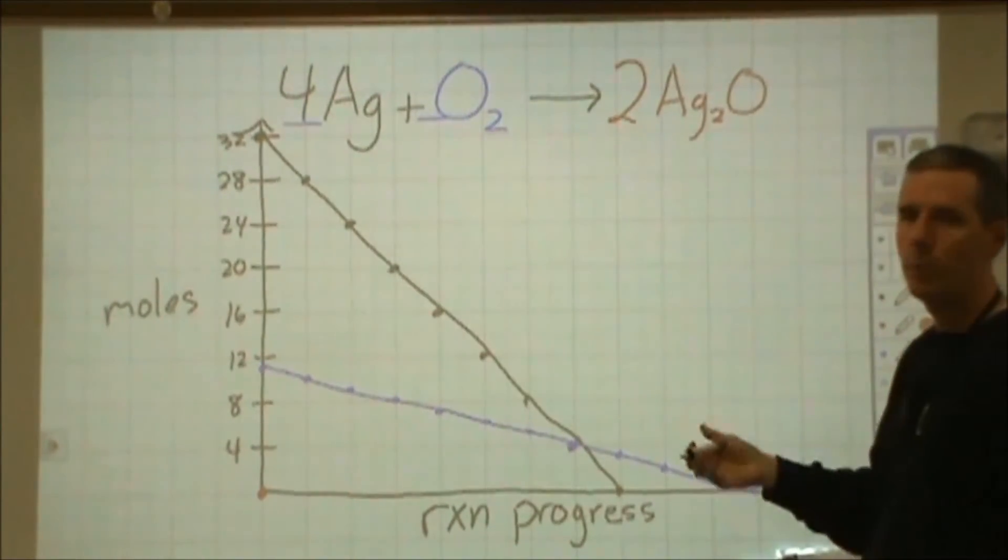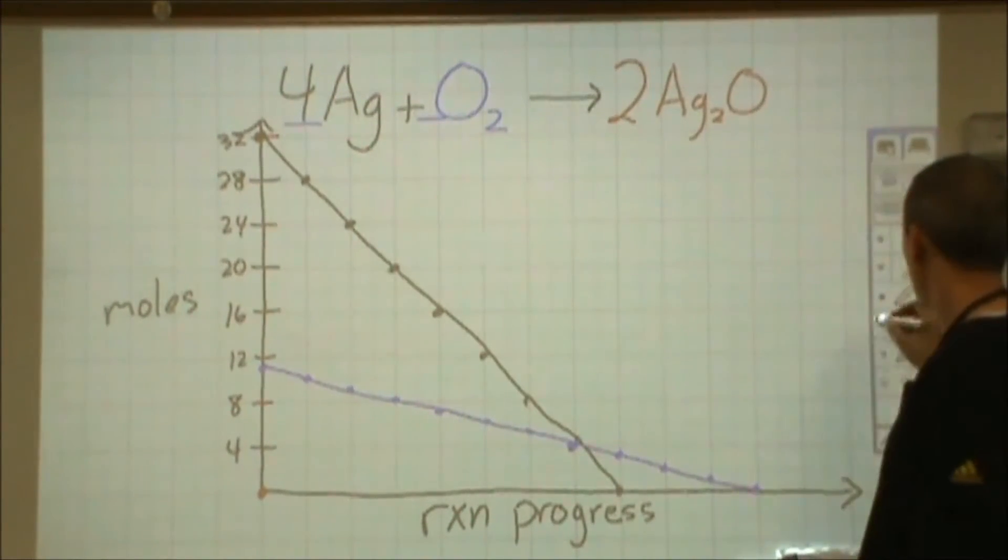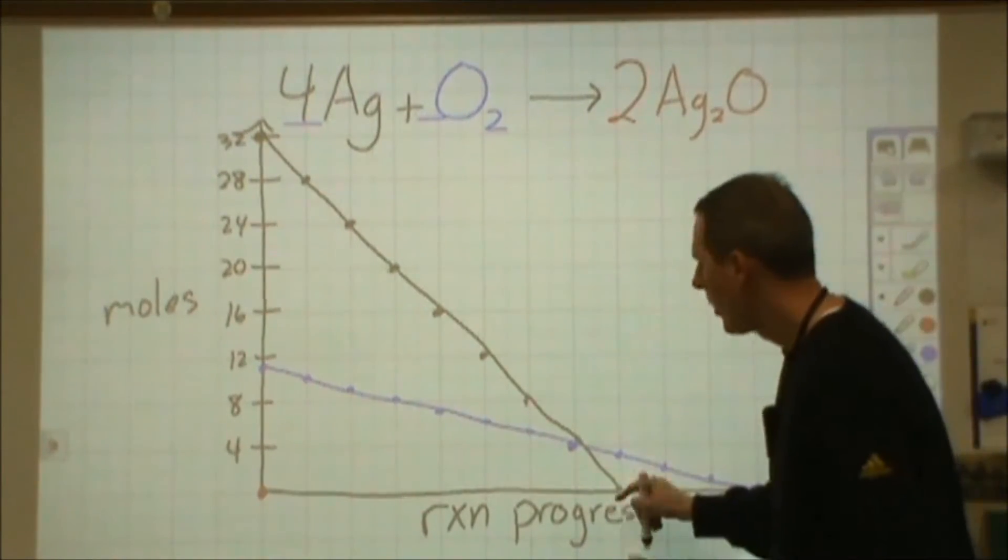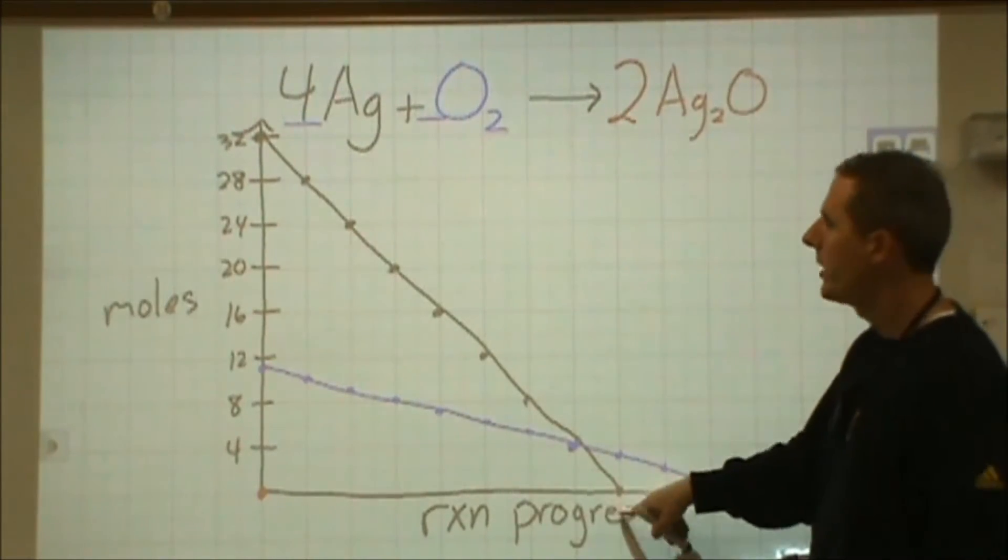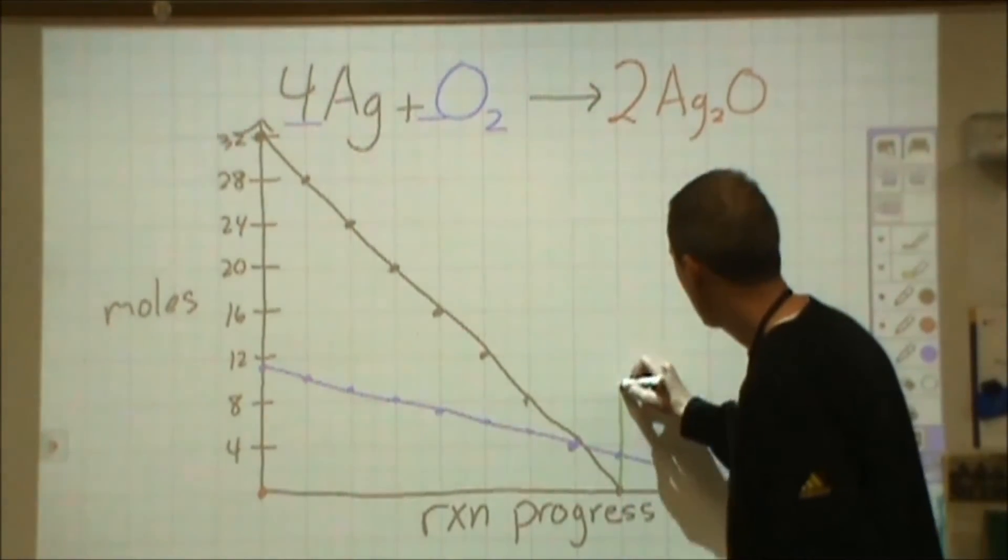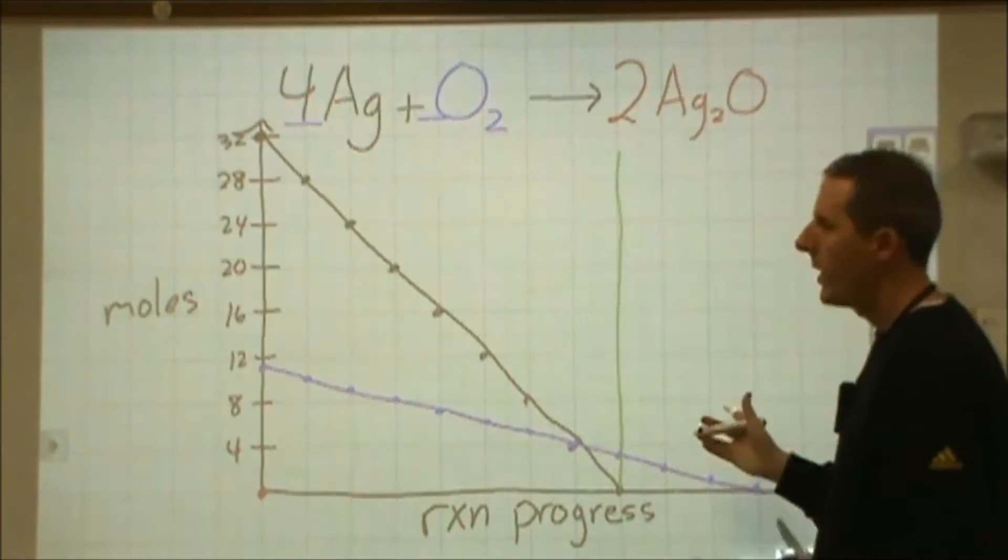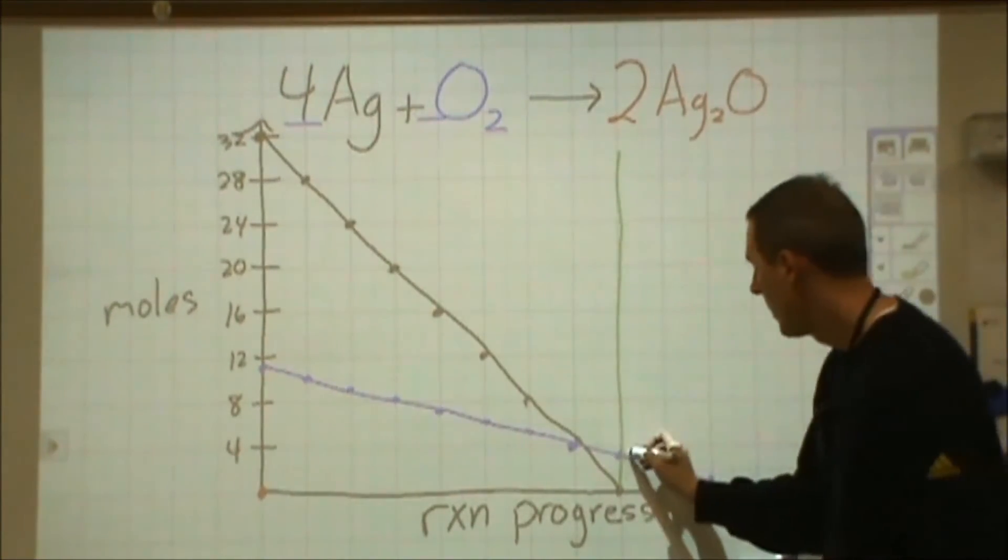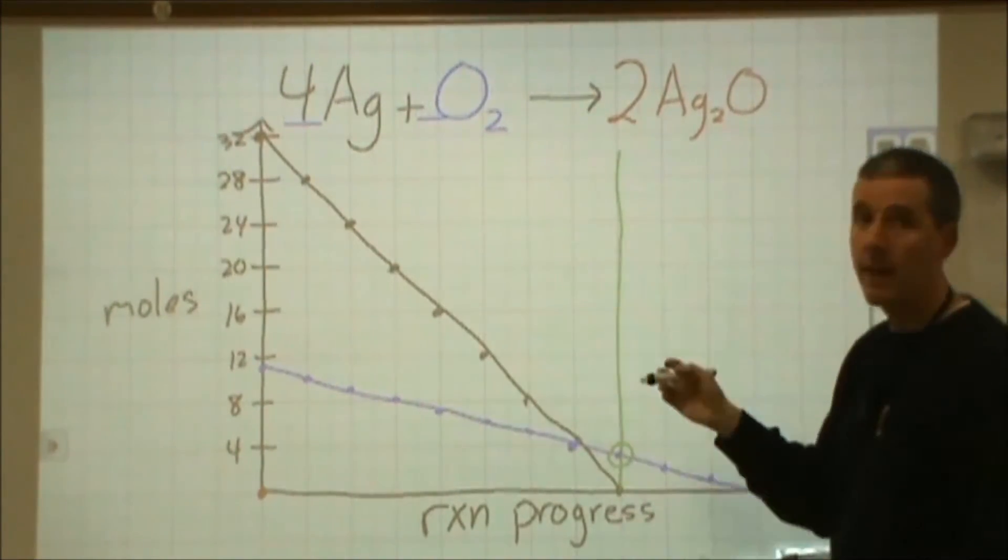So the question is, well, which one of these will run out? So as I'm going throughout the reaction, when I get to the point where I hit zero on either one of these, that is when my reaction will stop. So it's at this time that my reaction is done, and at that time, I still have some remaining oxygen.